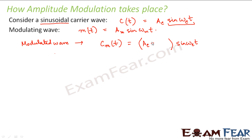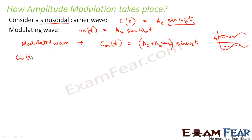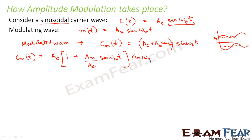The amplitude part will change as per the modulating wave. So the amplitude will become AC plus AM sine omega-m t. Because if you look at an amplitude modulated wave, this is how the amplitude varies. So the AC has AC plus AM sine omega-m t added to it. This is how we denote a modulated wave. If we take AC common, we get AC times (1 plus AM/AC sine omega-m t) times sine omega-c t.